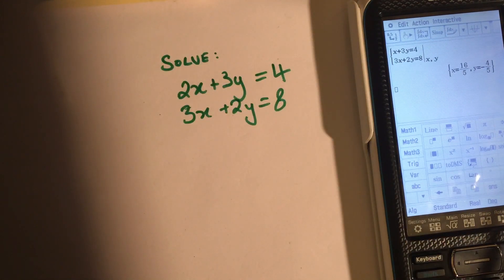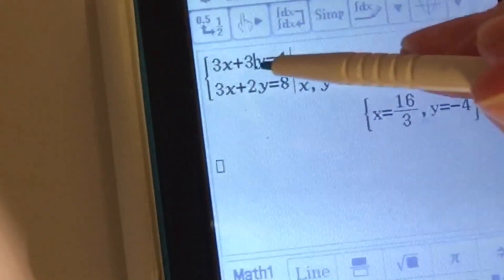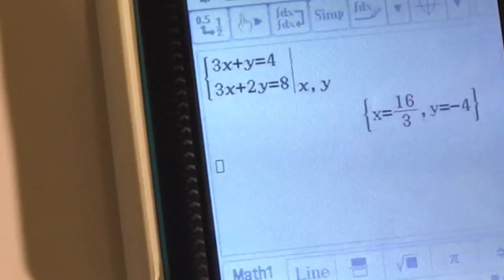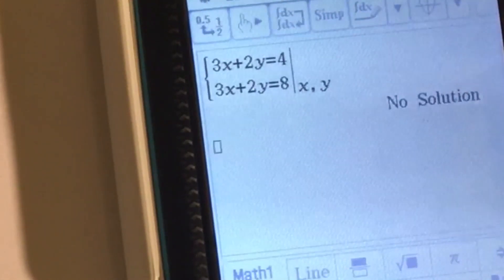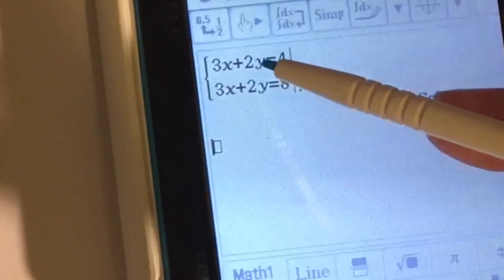I can actually just go back here and change any of these values just by clicking on it, pressing the backspace button, and typing. You can see here we get no solution because these would be parallel.